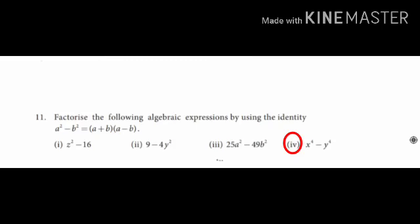Subdivision 4 homework: x to the power 4 minus y to the power 4. This can be written as x squared whole squared minus y squared whole squared. Here a equals x squared and b equals y squared — apply the same identity.